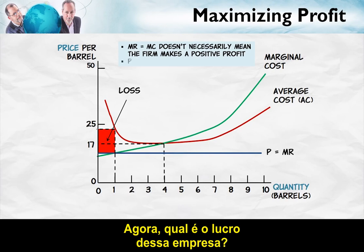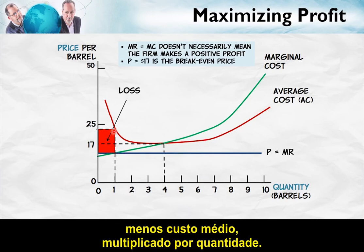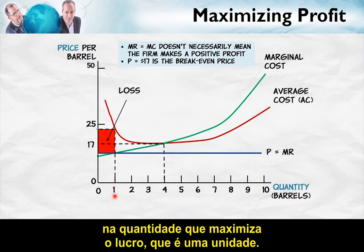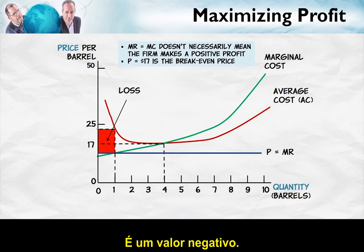What's the profit for the firm? Well, as usual, we measure profit as price minus average cost times quantity. But notice that price is below the average cost at the profit maximizing quantity of 1. Since price is below average cost, this is a loss — it's a negative quantity. It is a loss.